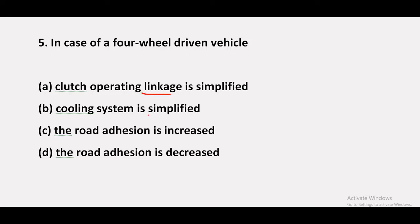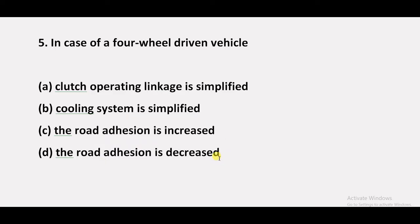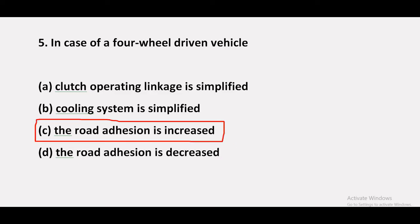Question 5: In case of a four-wheel driven vehicle — clutch operating linkage is simplified, cooling system is simplified, the road adhesion is increased, or the road adhesion is decreased? The answer is option C — the road adhesion is increased in case of a four-wheel driven vehicle.